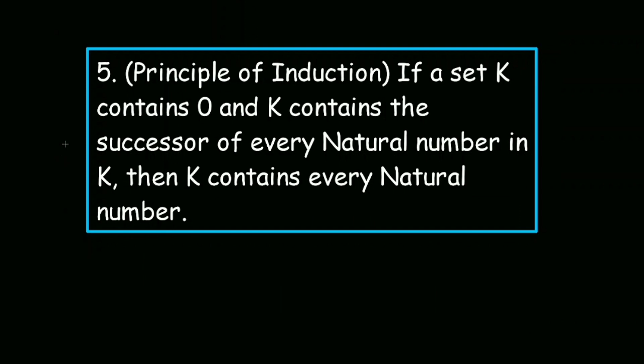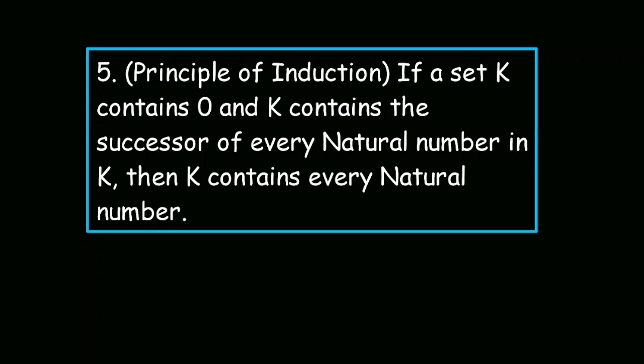And the last Peano axiom for defining natural numbers is the principle of induction. If a set K contains 0 and K contains the successor of every natural number in K, then K contains every natural number. Principle of induction is an extremely powerful proof method that can be used in proving a lot of generalized statements for all the natural numbers. I have a plan to make a separate video on induction to show how it can be used to prove theorems. Now, these five axioms here are the defining axioms of natural numbers. For any number to be natural, it has to follow these five axioms. If you want, you can check whether the natural numbers that we know follow these axioms. Also, you can find out all the natural numbers just by following these five axioms.